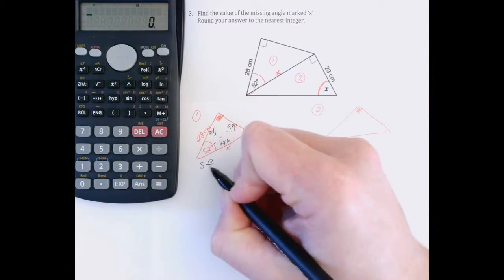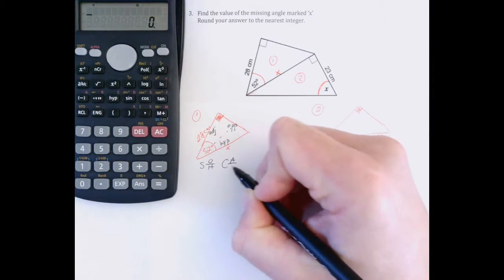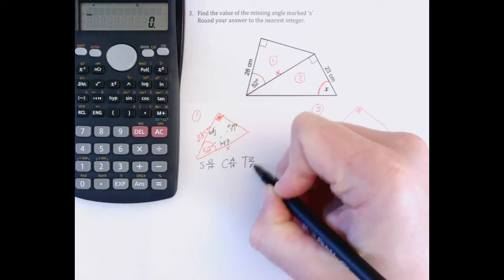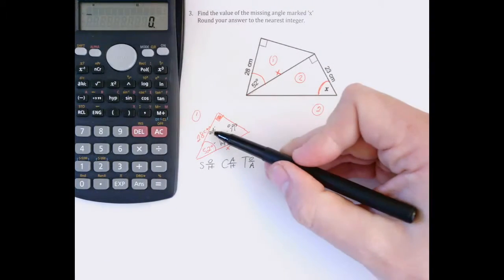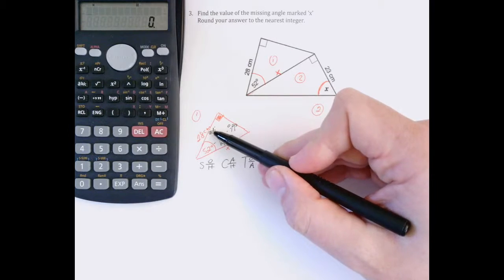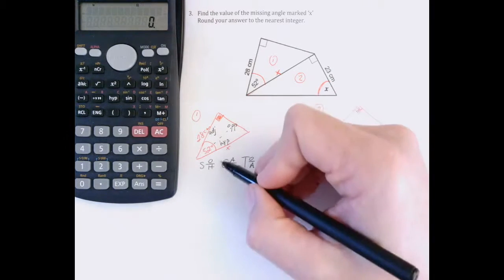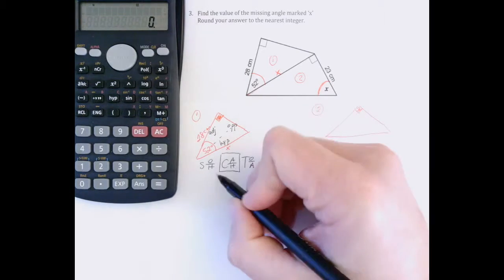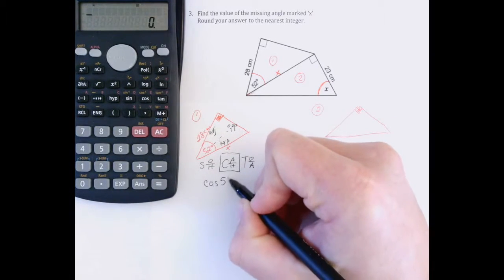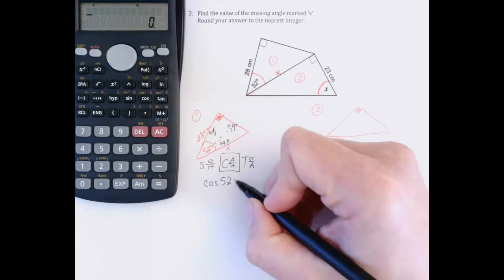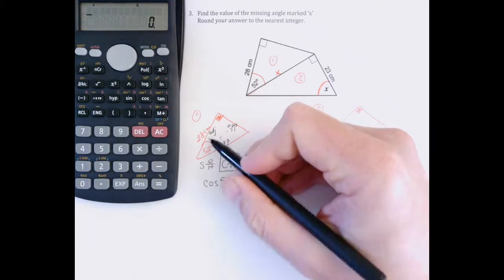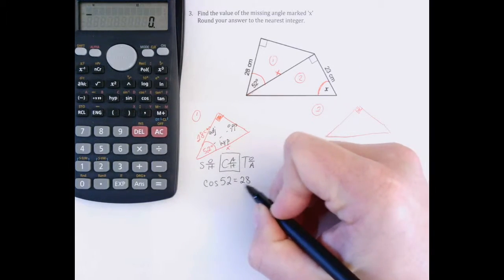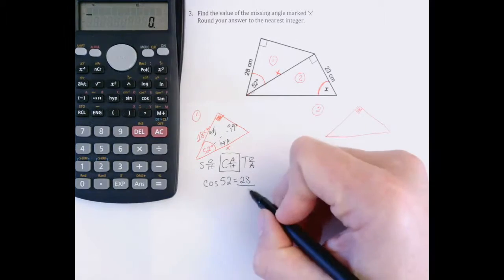So in SOHCAHTOA, I know that I'm working with adjacent hypotenuse. I have adjacent. I want hypotenuse. That means I'm working with the A and the H right here in CAH. So I'm going to write out cosine of 52, because that's the angle I'm working with, equals adjacent, 28, over hypotenuse, which is unknown, x.